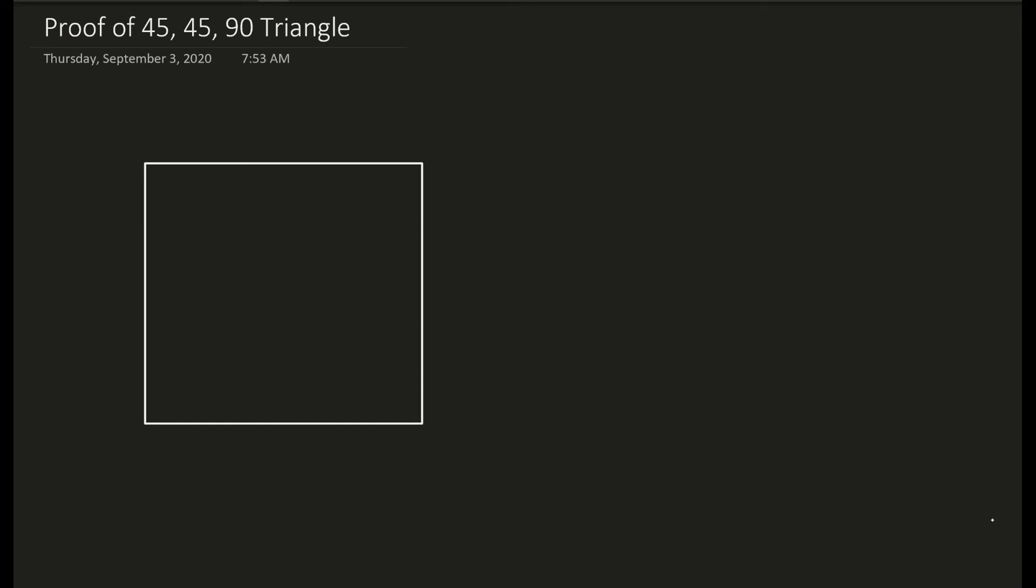In this video, I'd like to go over the proof for the 45-45-90 triangle. Normally when you have a right triangle and see this proof, you're used to seeing these values and may not know where they come from.